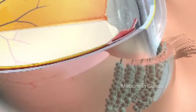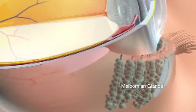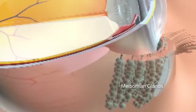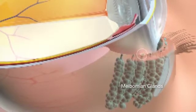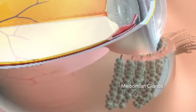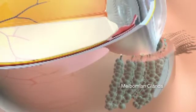Meibomian glands, located in the upper and lower eyelids, produce lipids called meibom that make up the outer layer of the tear film. A normal gland produces a tiny drop of clear meibom through its orifice at the lid margin. Dysfunctional glands either stop producing any meibom or only secrete thick, cloudy, or paste-like meibom when the eyelid is squeezed.